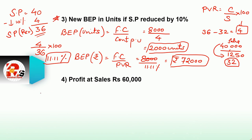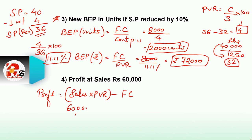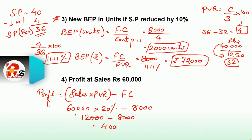For profit at sales of 60,000, the formula is profit equals sales multiplied by PVR minus fixed cost. Sales is 60,000, PVR is 20% (use the original PVR, not 11.11%). So 60,000 into 20% equals 12,000, minus fixed cost 8,000, gives profit of 4,000. This completes our first question.